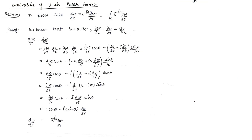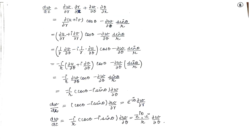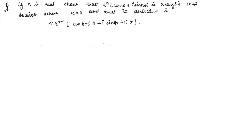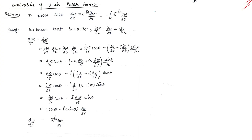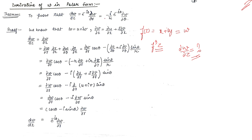Now moving to the second part of the theorem. We will discuss how to find the derivative of a function in polar form. F(Z) = U + IV = W, and the derivative F′(Z) = dW/dZ. We want to obtain the formula: dW/dZ = e^(−iθ)·∂W/∂R, or equivalently dW/dZ = (−i/R)·e^(−iθ)·∂W/∂θ.